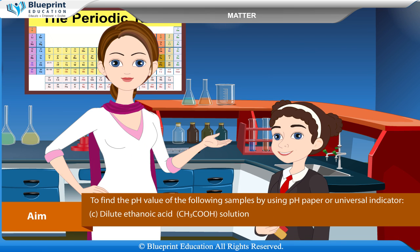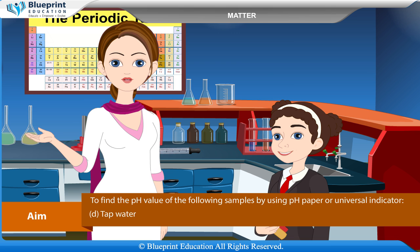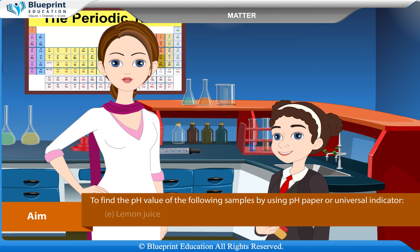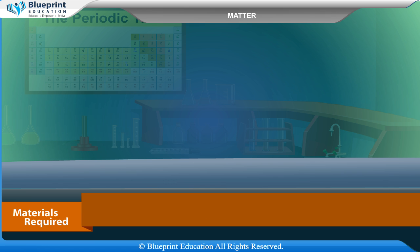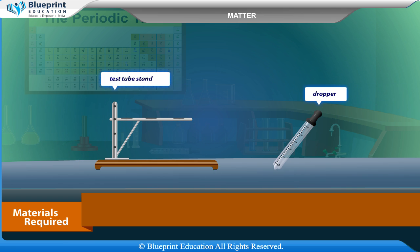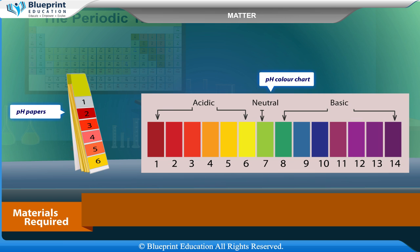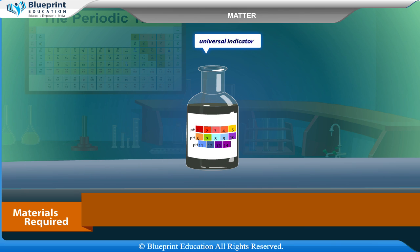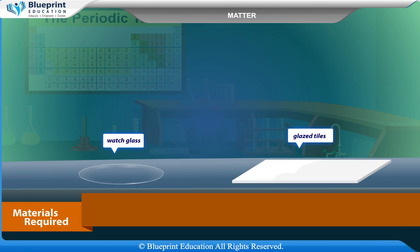The materials required are: test tubes, test tube stands, dropper, pH papers, pH color chart, universal indicator, and watch glass or glazed tiles, along with the given samples of dilute hydrochloric acid solution, dilute sodium hydroxide solution, dilute ethanoic acid solution, tap water, lemon juice, and dilute sodium bicarbonate solution.